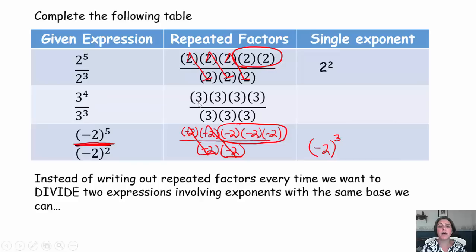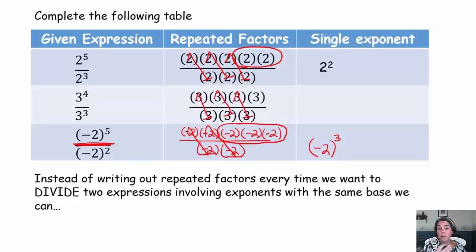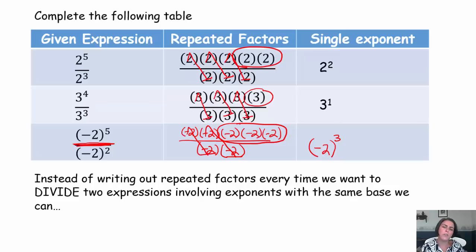Now we're going to simplify three to the fourth divided by three to the third. You need to write four factors of three in the numerator, three factors of three in the denominator, and then just divide out common factors — three divided by three is one, three times. How many factors of three do we have left? We just have one factor of three left, therefore that's three to the first power, or just three.